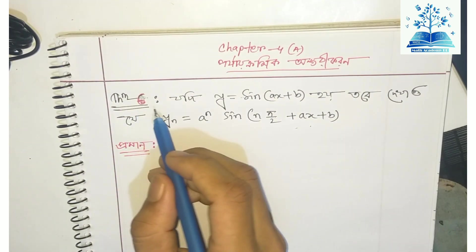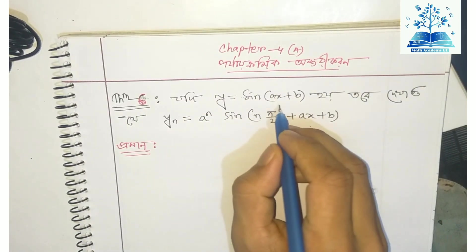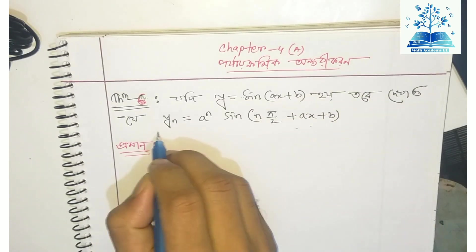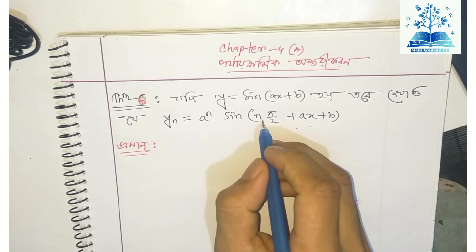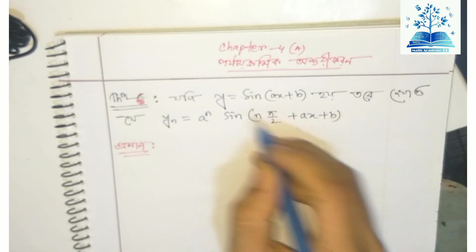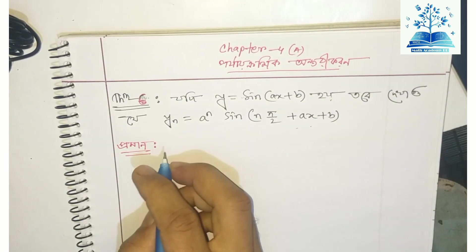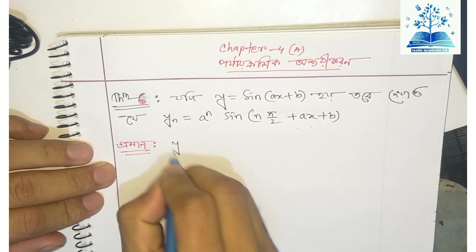Problem number six: If y equals sin(x + b), show that yₙ equals aⁿ sin(n·π/2 + x + b).